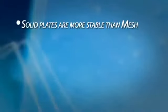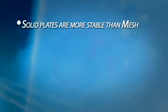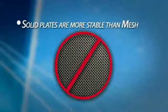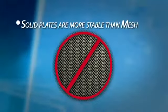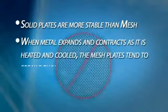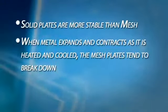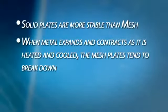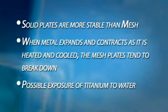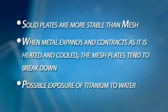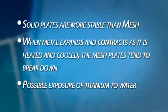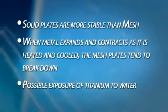Enagic uses solid titanium platinum plates. Their research has shown that solid plates are the most stable and time-tested method for creating ionized water. They don't use the mesh plates used by some manufacturers because of the long-term problems mesh plates pose. Mesh plates seem to make sense because they create more surface area to contact the water. The drawback is when metal expands and contracts as it is heated and cooled, the mesh plates tend to break down, reducing the ability of the plates to produce alkaline ionized water for more than a few minutes at a time. These cracks also expose titanium to the water, which creates potential health problems. Mesh plates are a way for manufacturers to save money while having nothing to do with increasing the quality of the water.